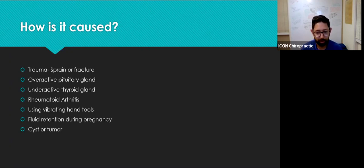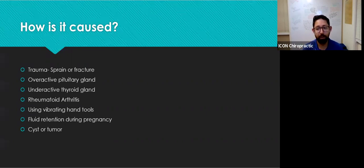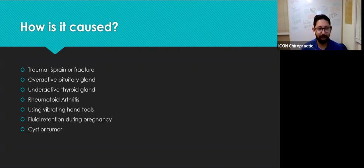Other factors that may contribute to compression are using vibrating hand tools, such as a drill or even something bigger like a jackhammer, which really irritate your nerves and wrist. Fluid retention during pregnancy is common, even during menopause. Lastly, simply developing a cyst around the wrist or a tumor within the carpal tunnel area can obviously cause irritation of the median nerve. The general idea is anything that can cause the median nerve to become irritated will result in pain, tingling, and numbness.